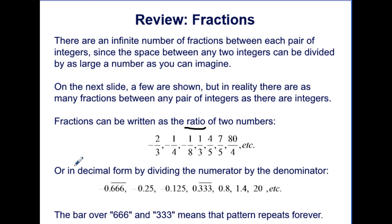Or, instead of ratio, you could have it in decimal form by dividing the numerator by the denominator. So we have here the same ratios, but as decimals: negative 0.6 repeating, negative 0.25, negative 0.125, 0.3 repeating, 0.8, 1.4, and 20.